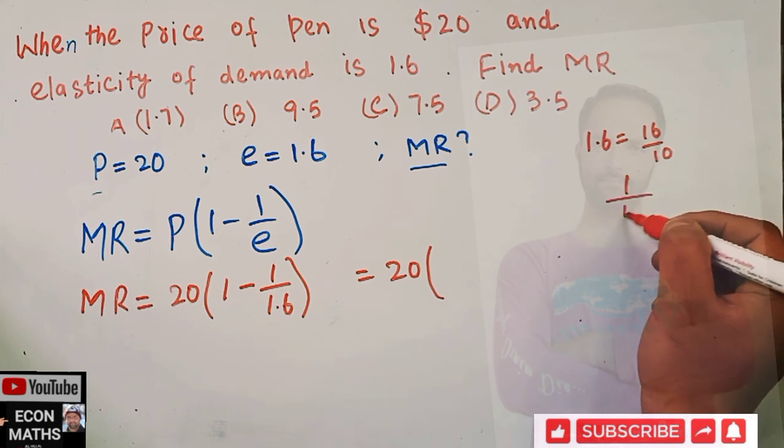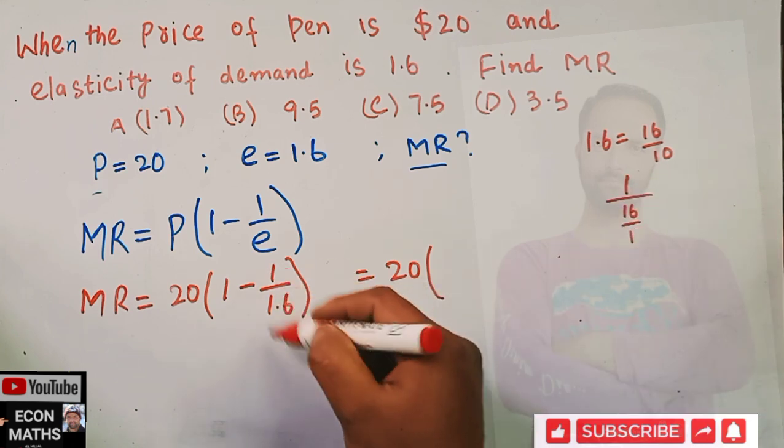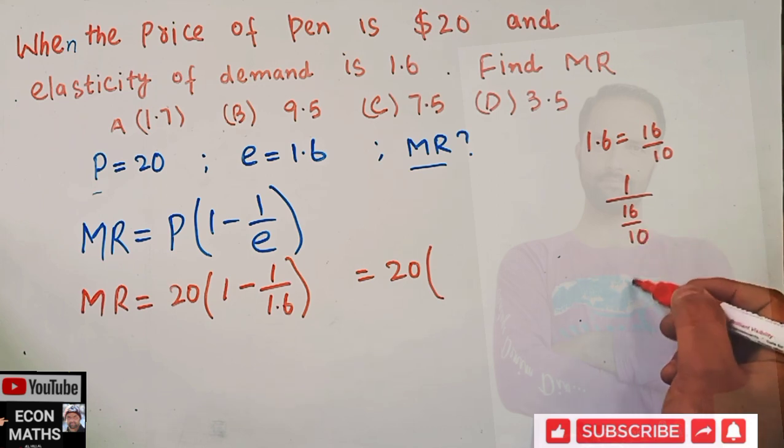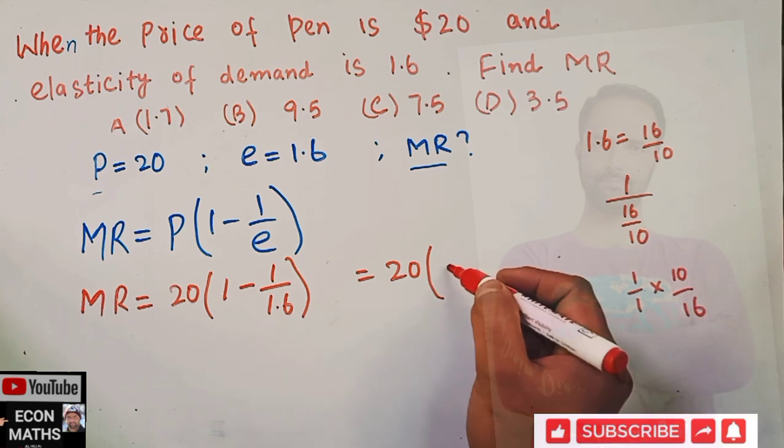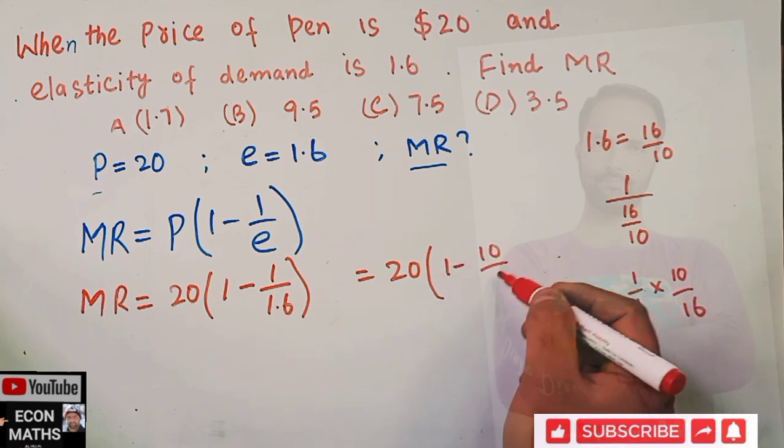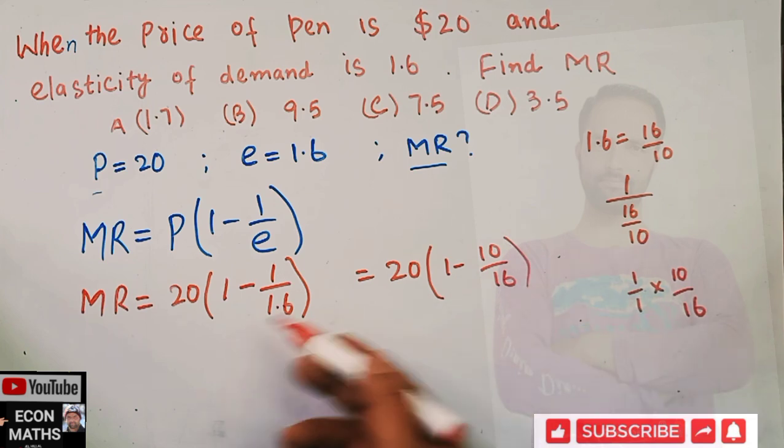We can write it like this: 1 minus 10 upon 16. Using simple mathematics here, we have 20 times (16 minus 10 upon 16). 16 minus 10 comes out to be 6 upon 16.